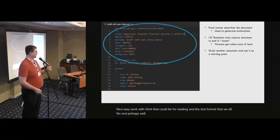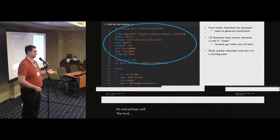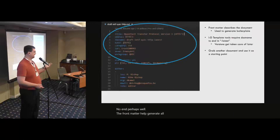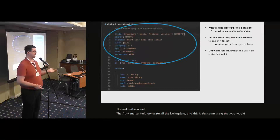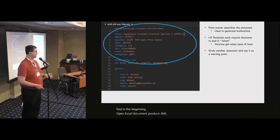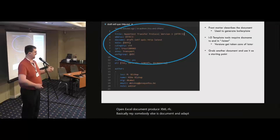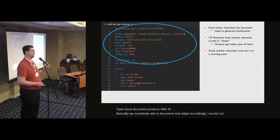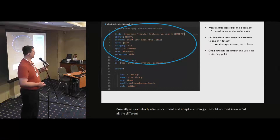The front matter helps generate all the boilerplate, and this is the same thing that you would find at the beginning of an XML document produced by XML.RFC. Basically, grab somebody else's document and adapt accordingly. I would not try to memorize what all the different things are that you have to put here to have a beginning document.